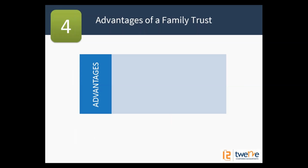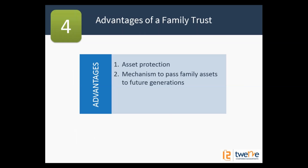The advantages of a family trust are: one, asset protection; two, a way of passing on assets to future generations; and three, reducing income tax — which also reduces capital gains tax, since CGT flows to beneficiaries who get the 50% discount. The main area we're going to talk about today is how it reduces your income tax, because that's one of the main reasons people have family trusts.